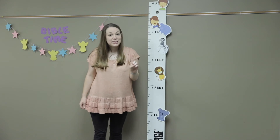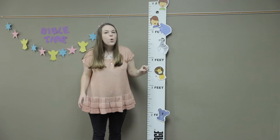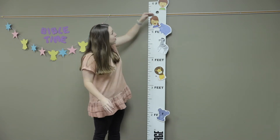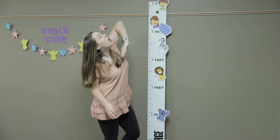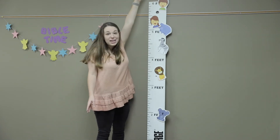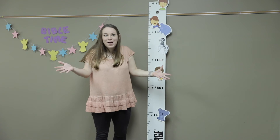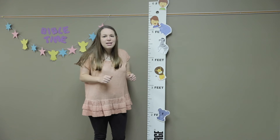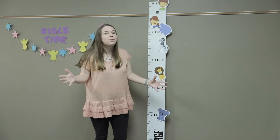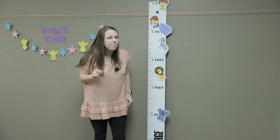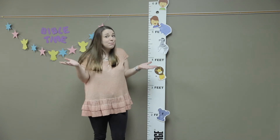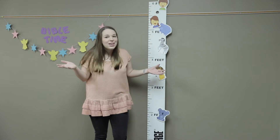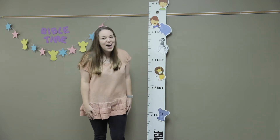Our Bible character today was nine feet and nine inches tall. Our ruler only goes to six feet, so he was taller than this room that we're in. Goliath wouldn't have fit in our Bible classroom, he was so tall. We're going to find out when Goliath went against God's army of the Israelites. Would you be scared if you had to fight someone that was nine feet tall? Let's get right into the Bible story and find out what happens.